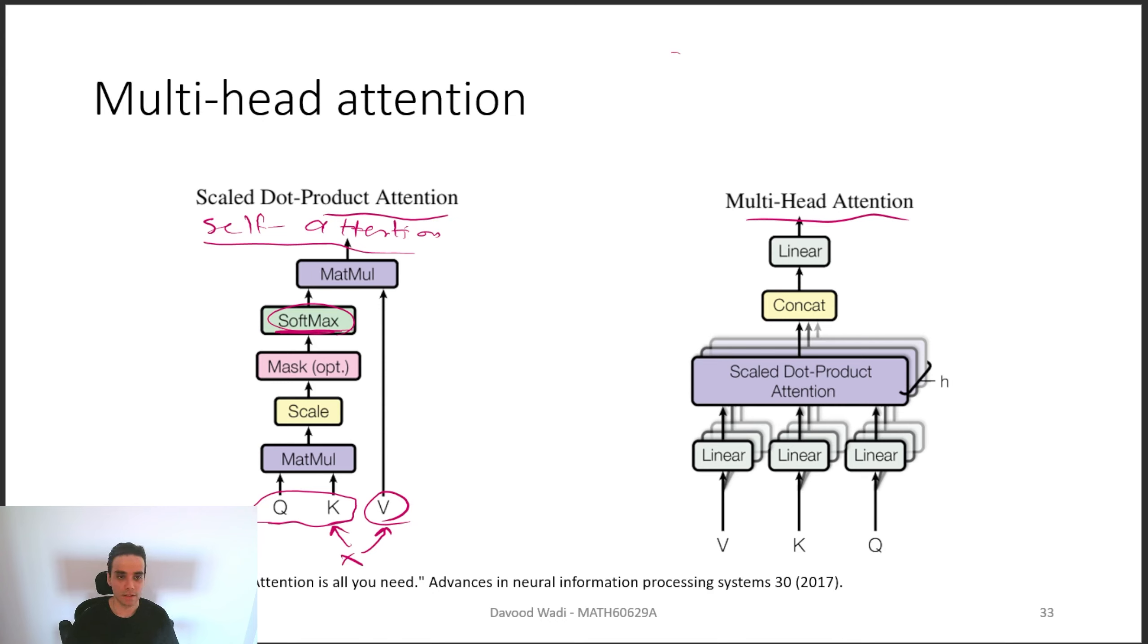So just like CNNs, where we create not just one kernel, but a block of kernels that would extract multiple features from a given image, here we create multiple multi-attention layers. Each one of them will create the attention for different words. And that's the concept of multi-head attention.